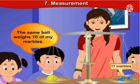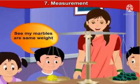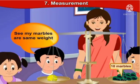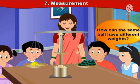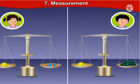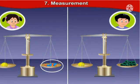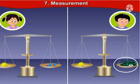The same ball weighs 10 of my marbles. You can see my marbles are bigger in weight. Salma says, how is that possible? How can the same ball have different weights? Tony replies, the marbles that Sonu brought were smaller than the marbles that Nandu brought. That's the reason for this confusion.